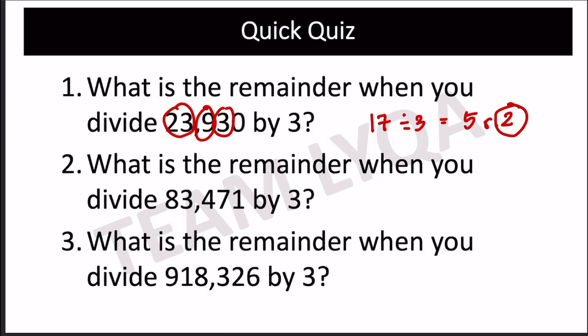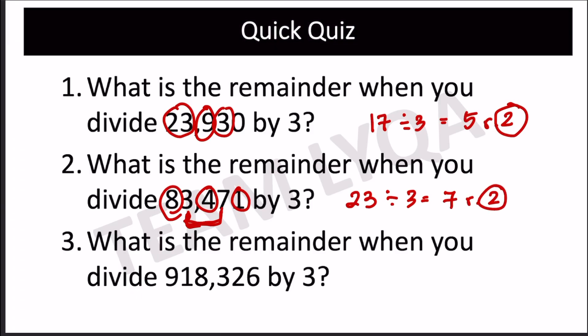Next, you have these. So, again, using chunking: 7 and 3 is 10 — isang 10 na agad yan. 8 and 4 is 12. 13 plus 10, that would be 23. 23 yung sum nitong mga digits na ito. So, pag dinivide ko siya sa 3, ang lalabas would be 7, remainder 2 — kasi 7 times 3 is 21. So, 23 minus 21, remainder 2.